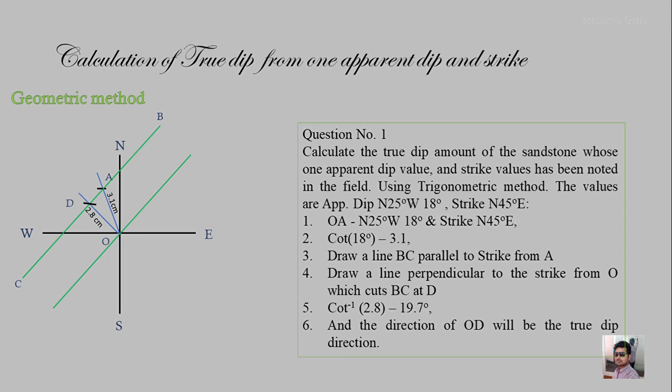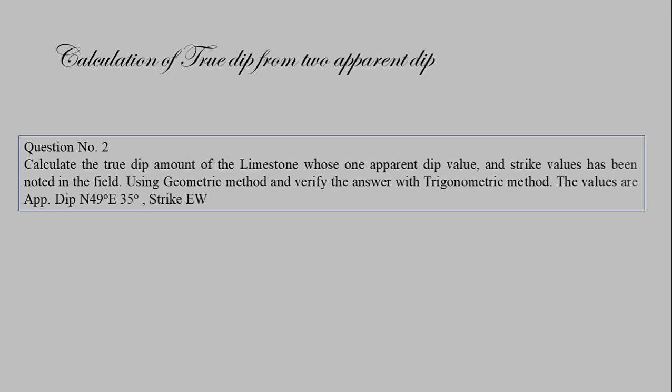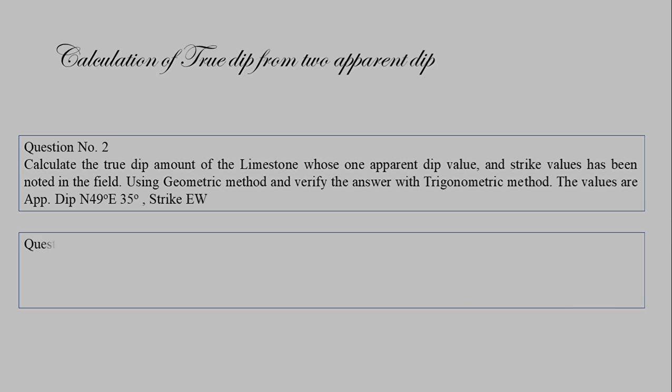In your answer, mention both the dip amount and the dip direction; you may also write the strike direction already given in the question. Here are two homework sums for the practical class. Question 1: Calculate the true dip of a limestone whose apparent dip is N49°E with a dip amount of 35°, and strike is East-West — use the geometric method and verify with the trigonometric method. Question 2 will be discussed in class.